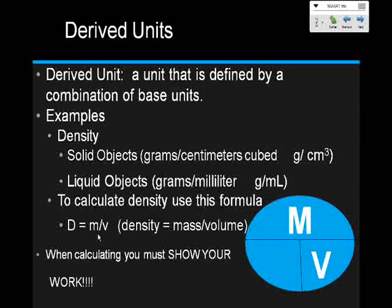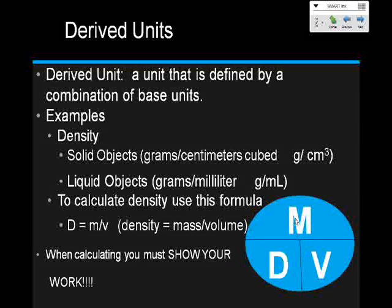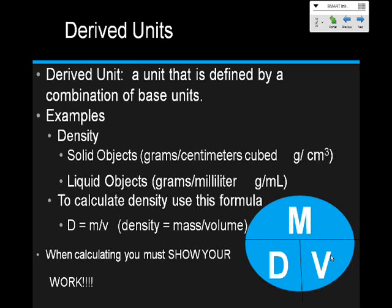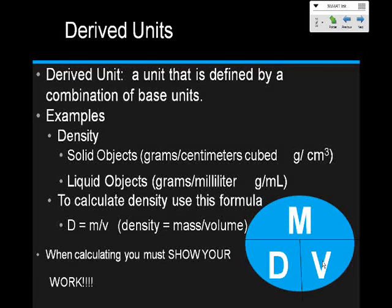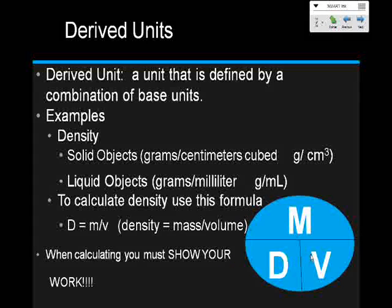You could have put the V on the other side — either way is fine. Whatever box is left over, you use the unit that it equals, so you put D. The way the circle works: if I need to find mass, I cover up mass with my finger and it gives me the equation. So M equals D times V, because D and V are next to each other, meaning you multiply them. If you need to find volume, cover it up and you get mass divided by density.